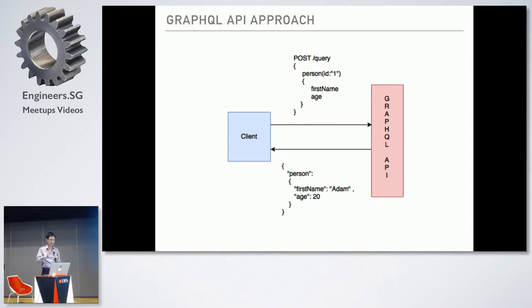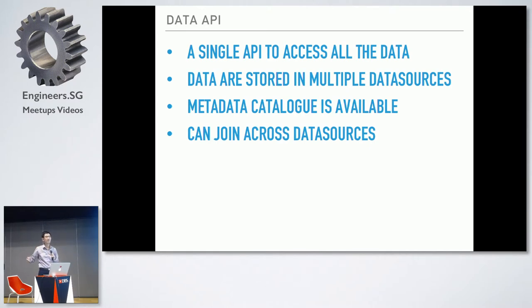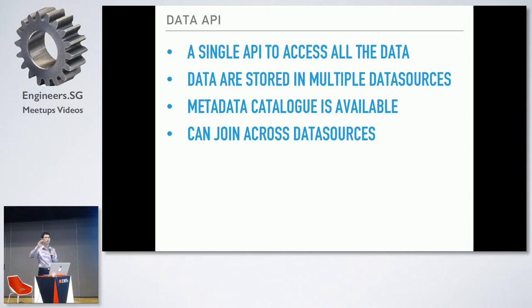Those are the main two differences between the REST API and the GraphQL API. A data API is a single API to access all the data we have. The assumption is we have data in multiple data sources — it can be in an Oracle database, a NoSQL database, a file system, or Hadoop. There is also some kind of metadata catalog available so clients can see what data is available. Clients may also want to join across data sources — employee information from Oracle joined with partner information from a file system or LDAP. We want a single API that can do this joining across multiple data sources.